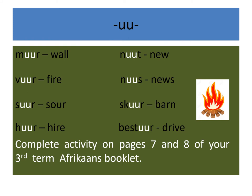Let's go over those words again. Mir — wall. Fear — fire. Seer — sawa. Hear — hire. Nit — new. Nis — noose. Skier — baan and bestier — drive.